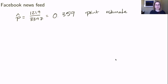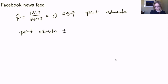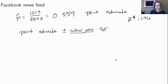So 0.359 is our point estimate. If someone asked for a best guess of what percent of the country has deliberately manipulated their Facebook newsfeed, we'd say 35.9%. But for a confidence interval we need more. We use point estimate plus or minus critical value times standard error. Using a normal distribution, our z* is 1.96, giving us 0.359 plus or minus 1.96 times the standard error.